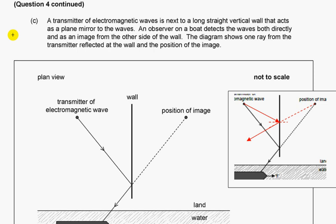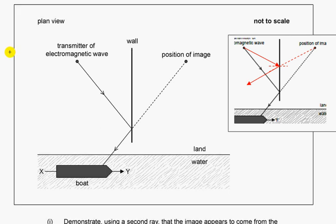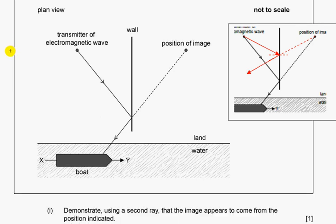A transmitter of electromagnetic waves is next to a long straight vertical wall that acts as a plane mirror to the wave. An observer on board detects the waves both directly and as an image from the other side of the wall. Demonstrate using a ray that the image appears to come from the position indicated. I send a ray that is reflected at the same angle, and projected backwards, it shows that it comes from the position of the image.